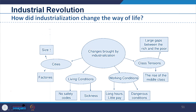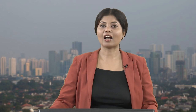This diagram shows how the way of life was changing. Cities were changing in size and becoming factory-centric. Living conditions showed no safety, sickness, and growing poverty. Working conditions showed long hours, little pay and dangerous environments. There were class tensions with an increasing gap between rich and poor, along with the rise of the middle class. The planning of the city was developed where classes were linked to residential patterns — elites at the innermost concentric part, middle class at the next level, and ethnic minorities in the fringe of the city.